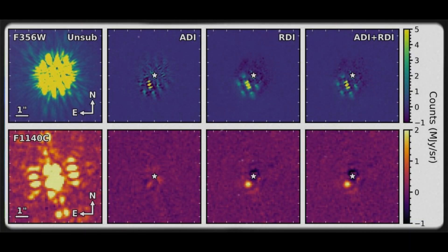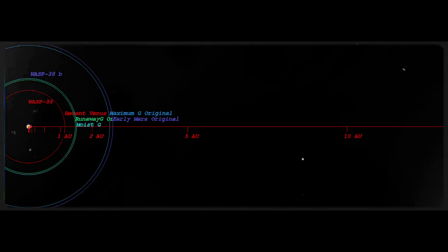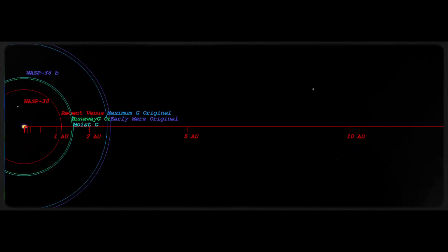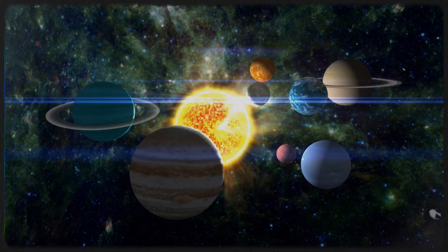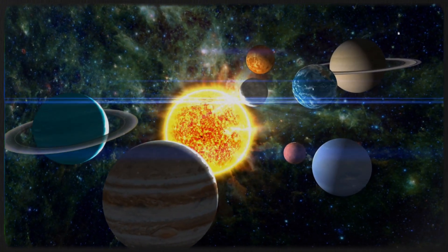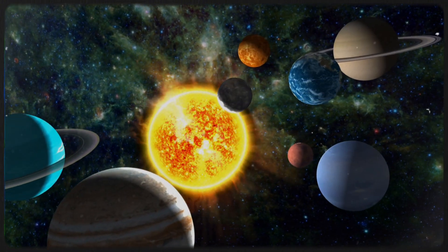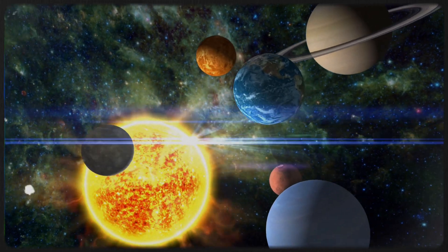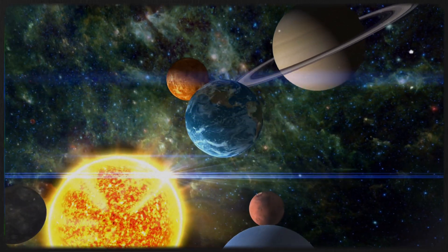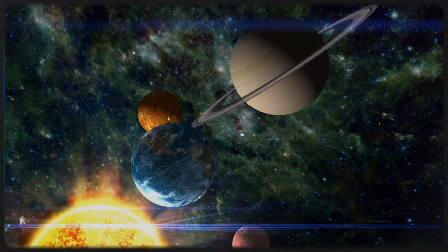The James Webb Space Telescope has also made significant discoveries about exoplanets. One notable find is WASP-39b, a planet 700 light-years away in the constellation Virgo. This hot gas giant, similar in size to Saturn, orbits its star much closer than Mercury orbits the Sun. Webb's mission to explore the universe's edges has proven incredibly successful, revealing details beyond our expectations.